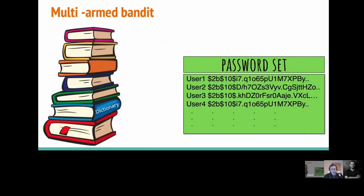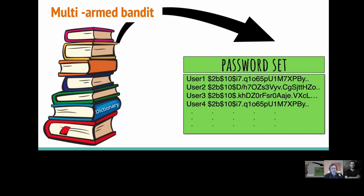So how are we going to take a multi-armed bandit approach to this? On one side we have a list of dictionaries we can use for getting password guesses, and on the other side we have our hashes. What do we do? We have a look at our dictionary and we make a guess. So suppose we make '123456' as a guess, which we know is a very common password in lots of datasets.